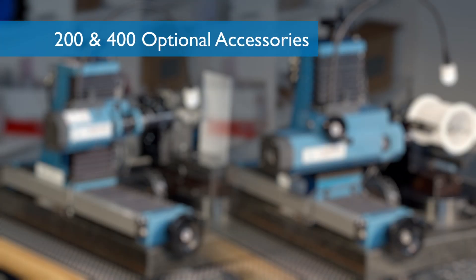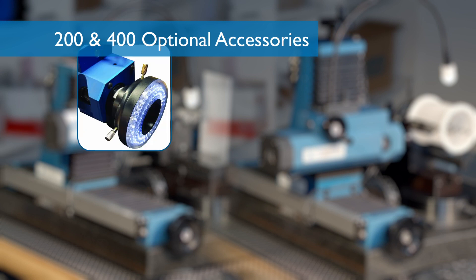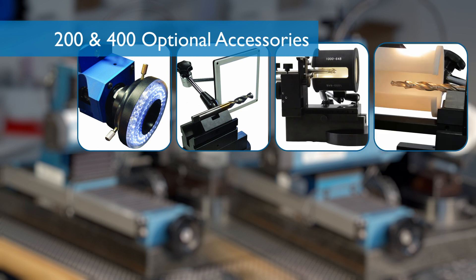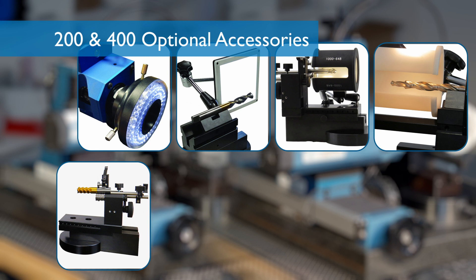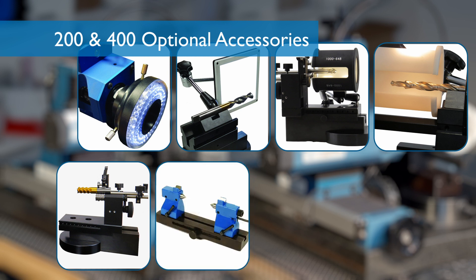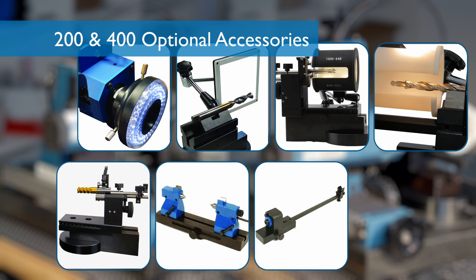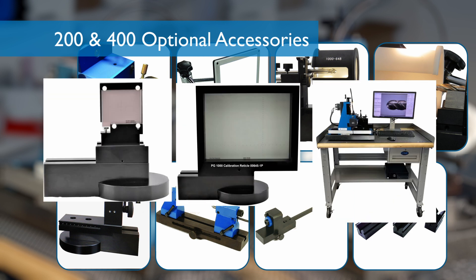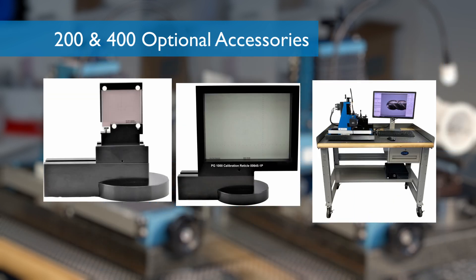In addition to standard features, there are many common accessories available for the 200 or the 400. In terms of lighting, there's a ring light, a backlight, an illumination tube, and a light diffuser tube. There are also concentricity fixtures, center fixtures, gun drill fixtures, longer V-blocks or specialty V-block inserts, calibration reticles, and even a customized PC workbench.